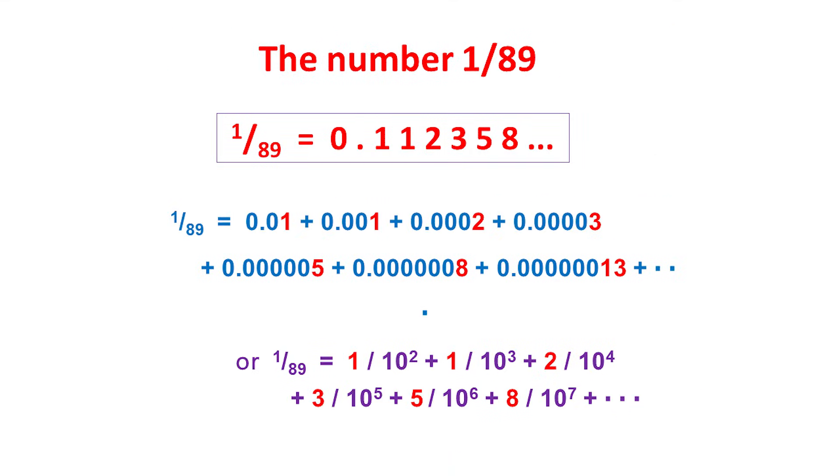I'd like to conclude with an unexpected feature of the Fibonacci number 89. The decimal form of its reciprocal, 1 over 89, begins with 0.011235, clearly exhibiting the early Fibonacci numbers. Indeed, 1 over 89 is exactly equal to the infinite sum of numbers shown in the middle, where the Fibonacci numbers appear after lots of zeros. Or below in fractional form, as 1 over 10 squared, plus 1 over 10 cubed, plus 2 over 10 to the 4th, plus 3 over 10 to the 5th, and so on. And with that truly remarkable result, I'd like to thank you for listening.